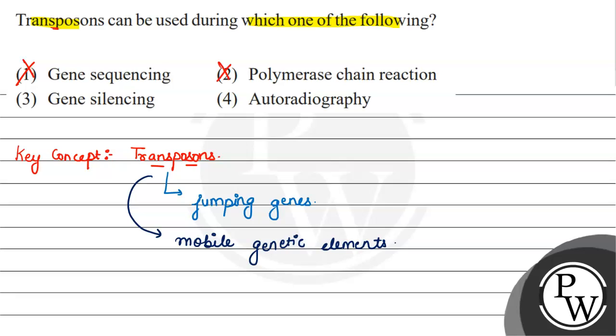Option 2, polymerase chain reaction, is wrong. What do we do in PCR? We amplify a DNA fragment and create multiple copies, which doesn't need transposons.